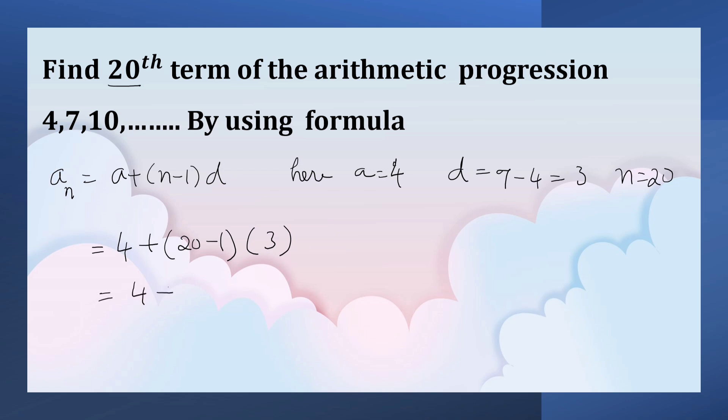That is equal to 4 + 19 × 3, which equals 4 + 57 = 61. So, the 20th term of the AP is 61.